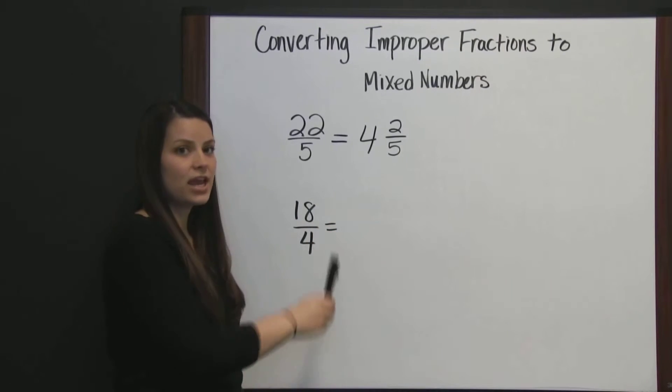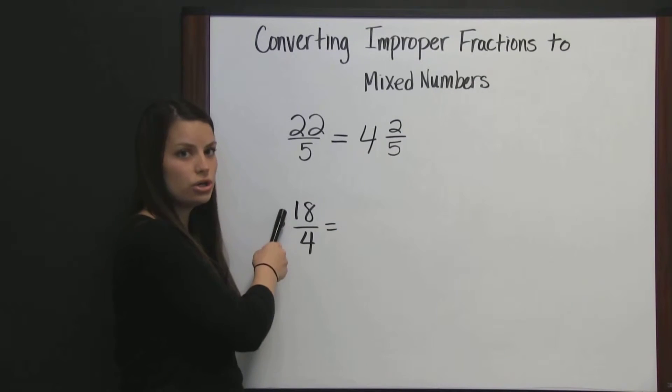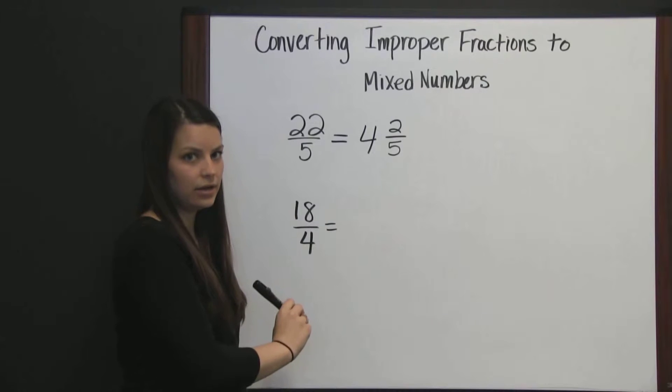Again, to change an improper fraction to a mixed number, we're going to start by dividing our numerator by our denominator.